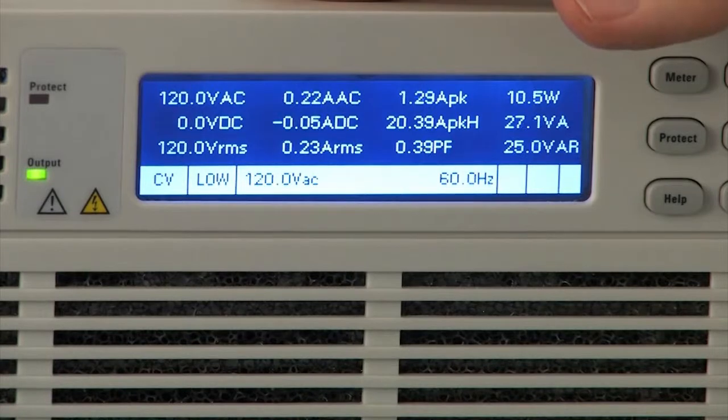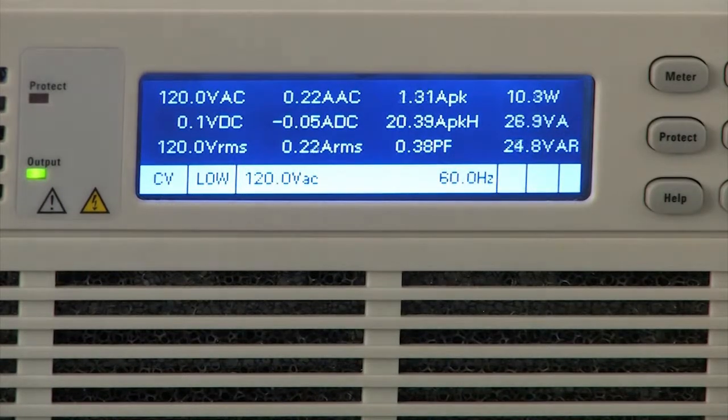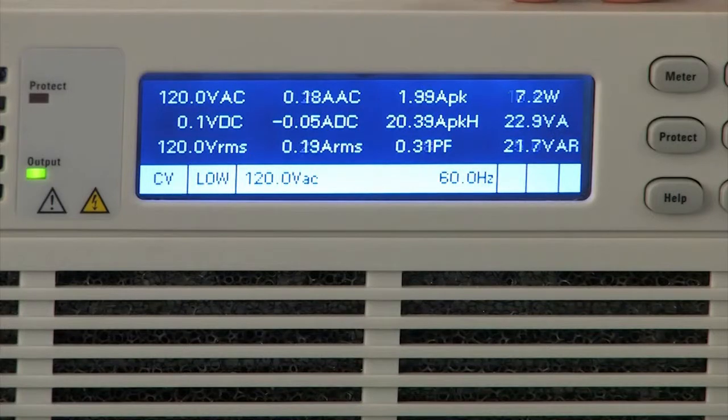And we also have the ability built into the AC source to change the phase angle at which the output turns on, the output of the AC source. So you can see what the peak inrush current is and how it varies with the phase turn-on of the AC source itself.